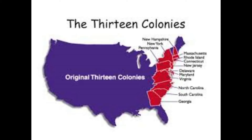When America was first started, it was made up of what we call the 13 original colonies — at first, there were only 13 states in America. You can see the 13 original colonies in red on this map. The rest of America, the part shown in blue, was unsettled and considered wild. This was the American frontier, where many of our tall tales will take place.